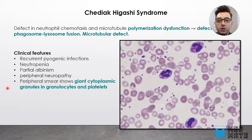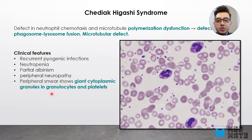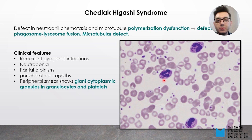Peripheral neuropathy is another clinical feature. Importantly, in the peripheral smear of patients with Chediak-Higashi syndrome, we can observe giant cytoplasmic granules in granulocytes and platelets. The Golgi apparatus produces these granules, but because of the microtubule defect, they cannot be trafficked to different parts of the cell and accumulate, causing the formation of giant cytoplasmic granules.